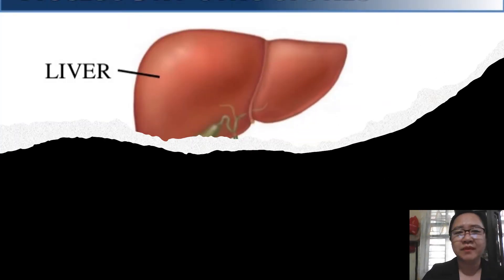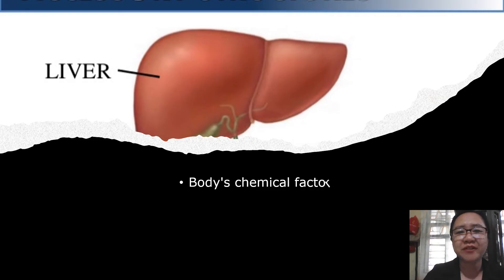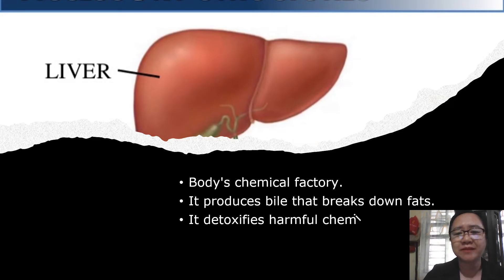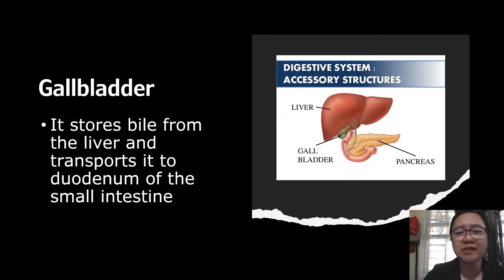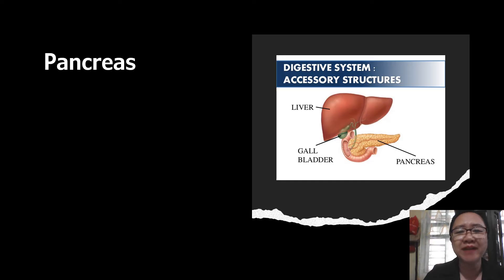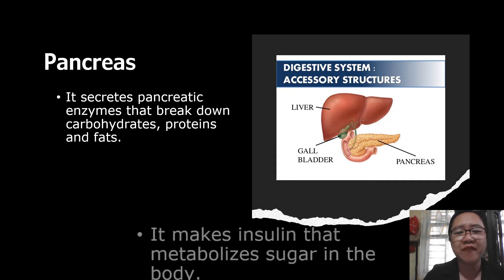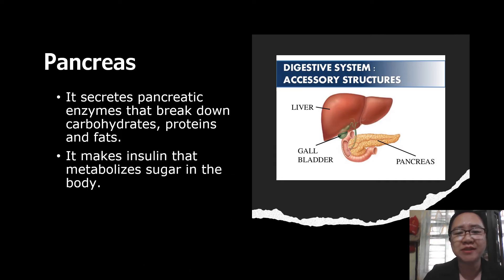Now let us study the different accessory organs. The first accessory organ is the liver — the body's chemical factory. It produces bile that breaks down fats, and it detoxifies harmful chemicals in the body. The second is the gallbladder, which stores bile from the liver and transports it to the duodenum of the small intestine. The third is the pancreas. It secretes pancreatic enzymes that break down carbohydrates, proteins, and fats. It also makes insulin that metabolizes sugar in the body.